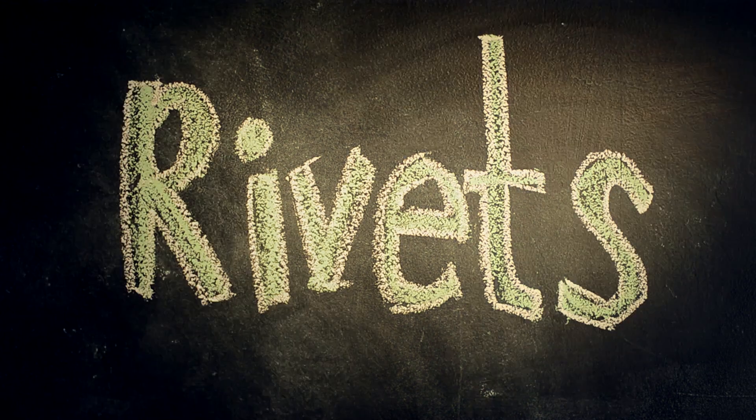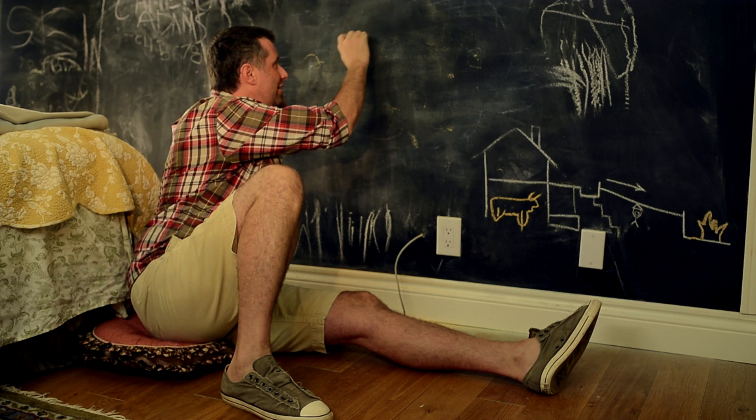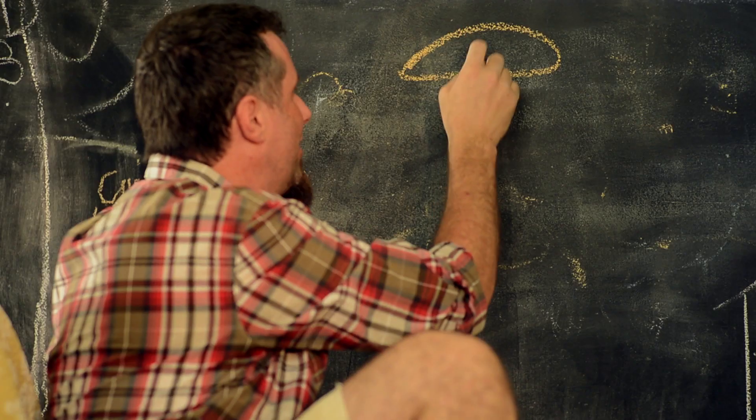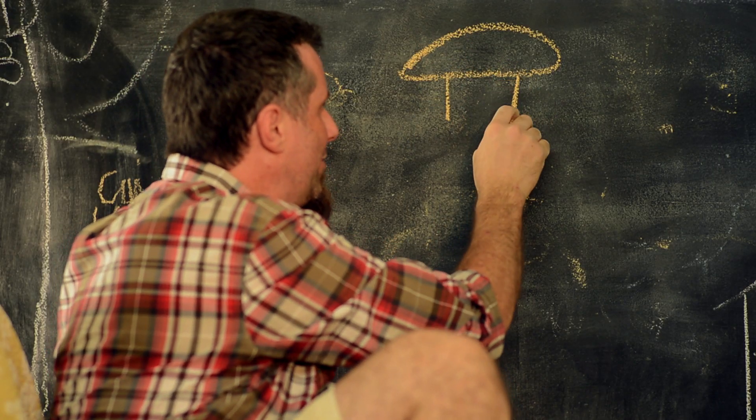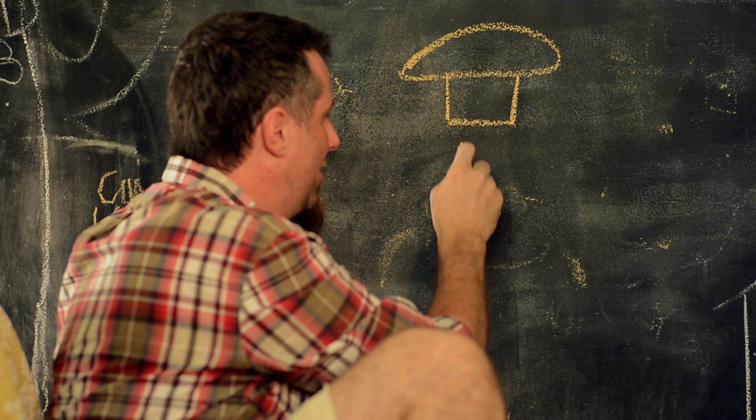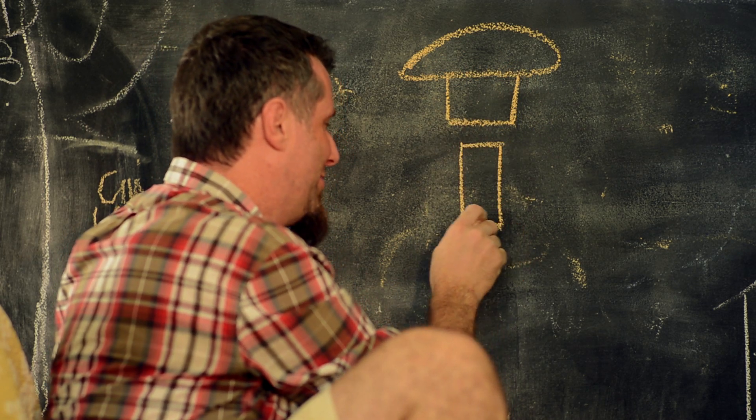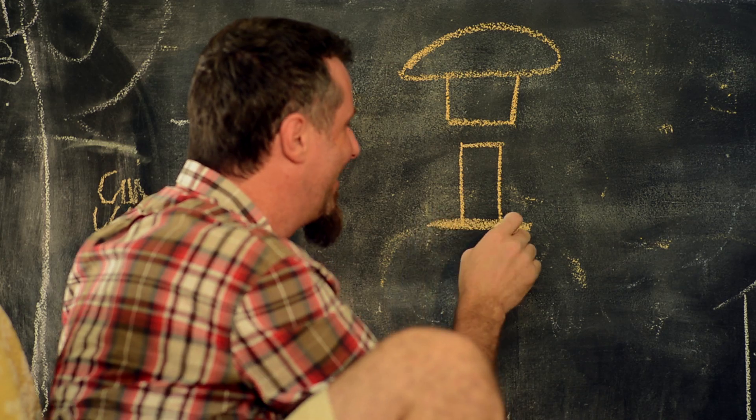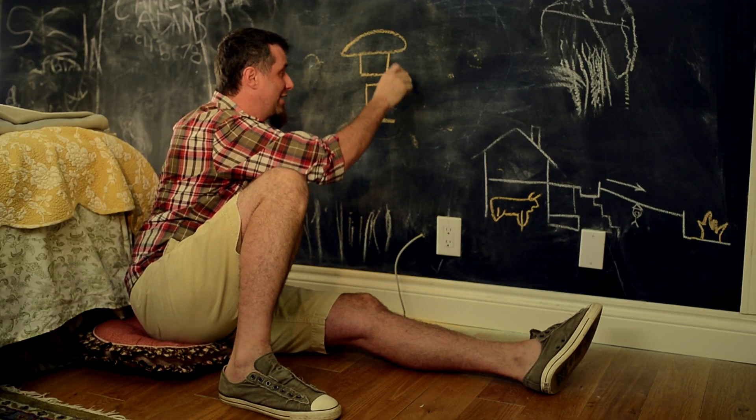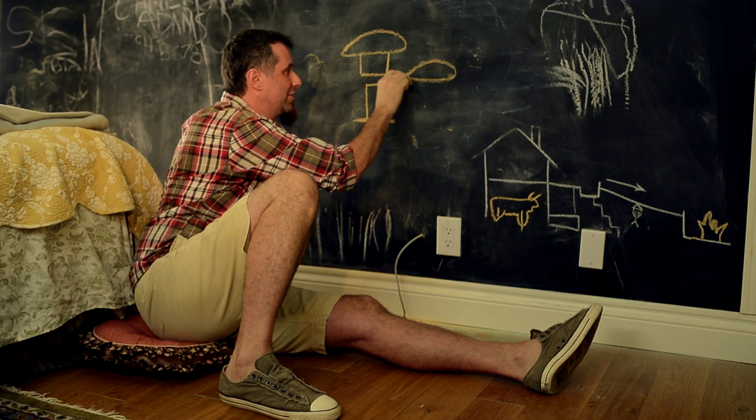There are two kinds of rivets we use. One has a rounded top - here's the female end and then you have the male end. When you smash them together you get a rounded top and then the flat bottom, all squished together in there with the leather in between.